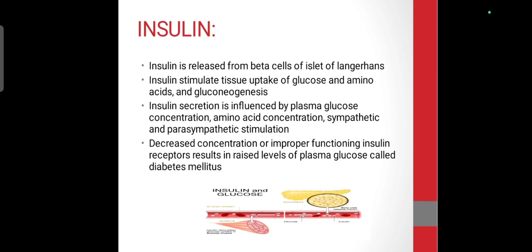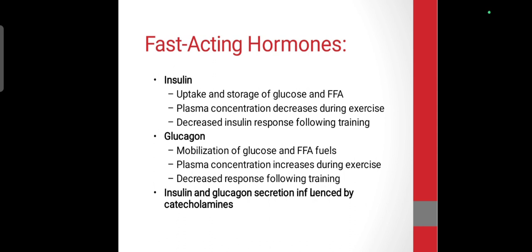Insulin is released from beta cells. When you eat and blood glucose increases, insulin is released to maintain glucose balance. If insulin is not available, glucose increases and this can lead to diabetes mellitus. Insulin is a fast-acting hormone that helps glucose storage and free fatty acid mobilization. During exercise, plasma glucagon concentration increases glucose and free fatty acids.